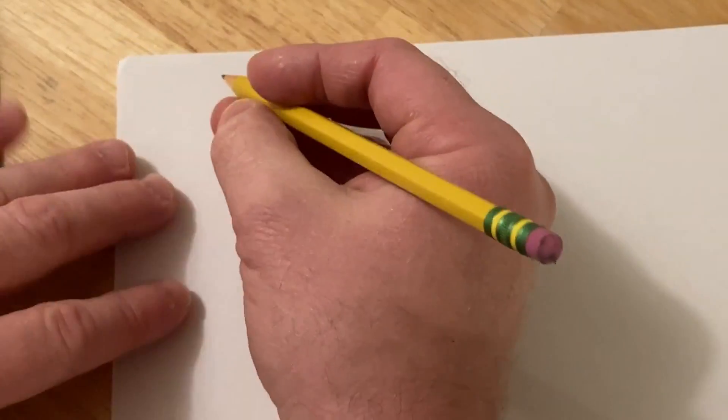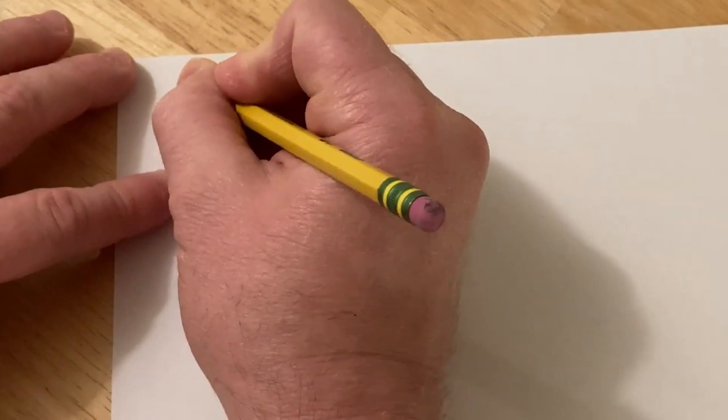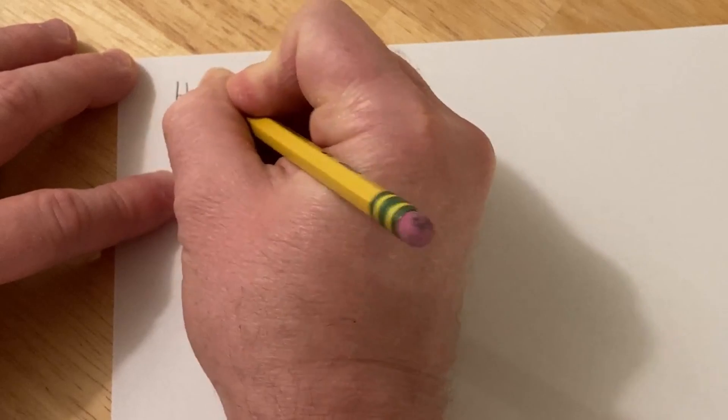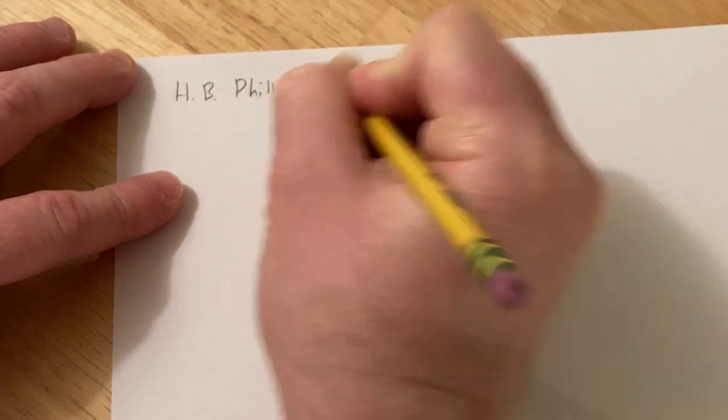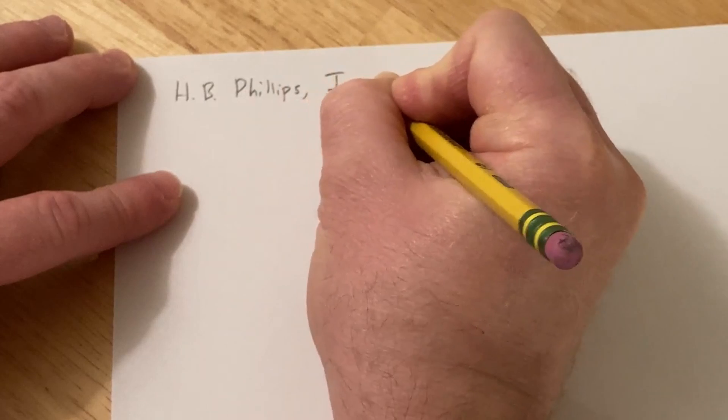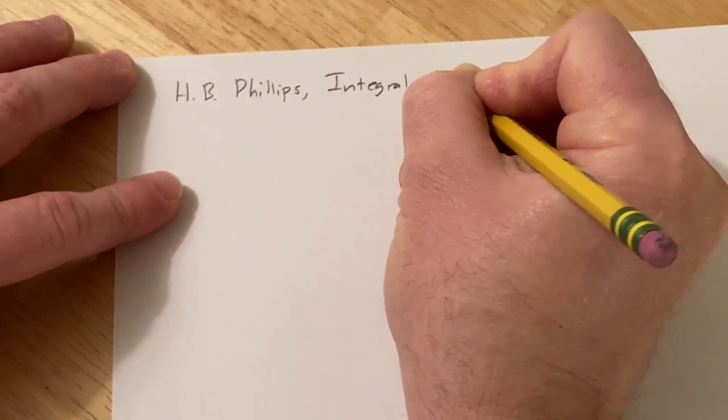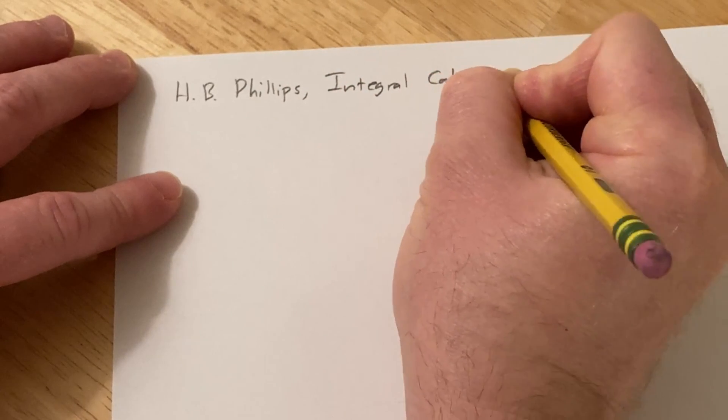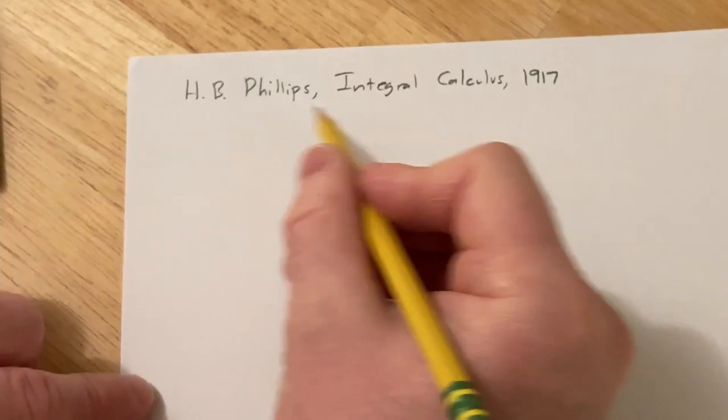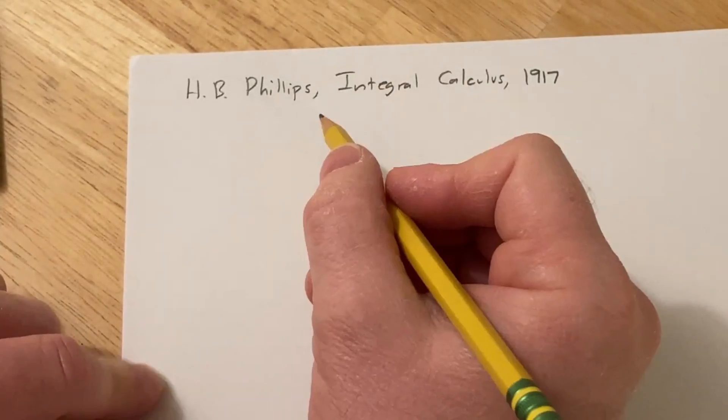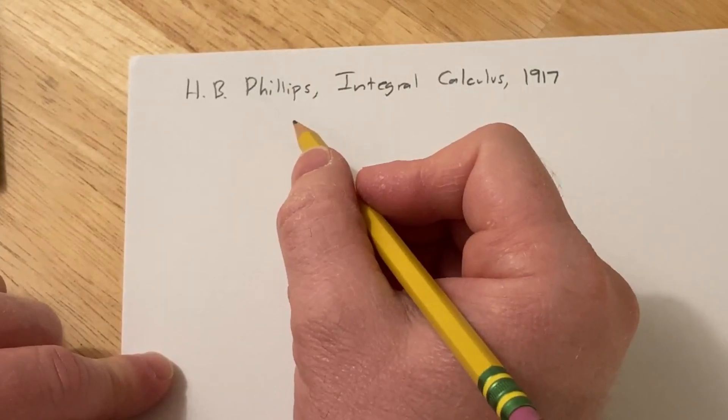Hi, in this problem we're going to do a problem from a book by H.B. Phillips, and the book is called Integral Calculus, and it was published in 1917. H.B. Phillips was an assistant professor at MIT, which stands for the Massachusetts Institute of Technology.